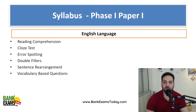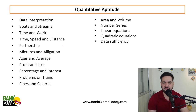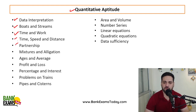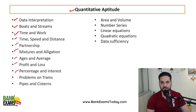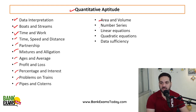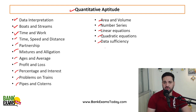The syllabus for phase one, paper one: in English language there is reading comprehension, cloze test, error spotting, double fillers, sentence rearrangement, and vocabulary-based questions. For quantitative aptitude: data interpretation, boats and streams, time and work, time speed and distance, partnerships, mixtures and allegation, ages and averages, profit and loss, percentage and interest, simple and compound interest, problems based on trains, pipes and cisterns, area and volume, number series, linear equation, quadratic equation, and data sufficiency.